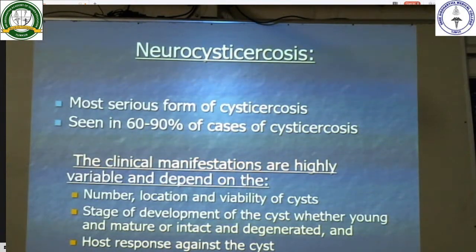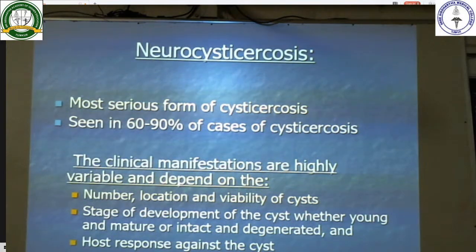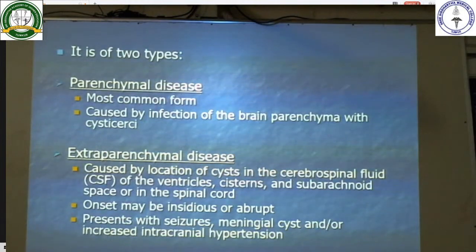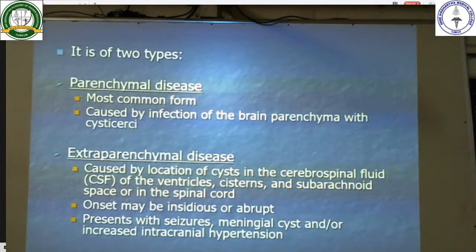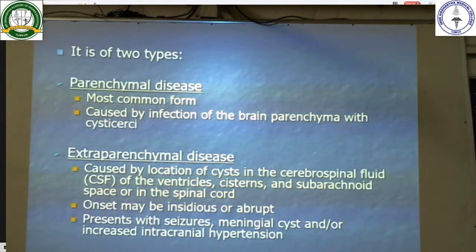Neurocysticercosis is the most serious form of cysticercosis, occurring in 60 to 90 percent of cases. Clinical manifestations are highly variable and depend on the number, location, and viability of the cyst, the stage of development, whether young and mature or intact and degenerated, and also the host's response. It is of two types: parenchymal — the most common form caused by infection of the brain parenchyma — and extraparenchymal, caused by cysts in the CSF of the ventricles, cisterns, subarachnoid space, or spinal cord. Presentation includes seizures, meningeal cysts, and increased intracranial tension.